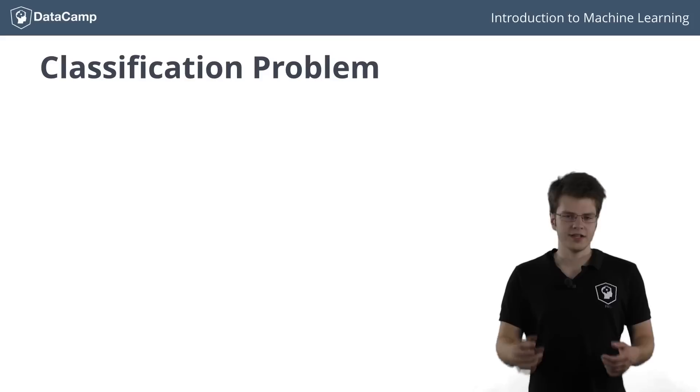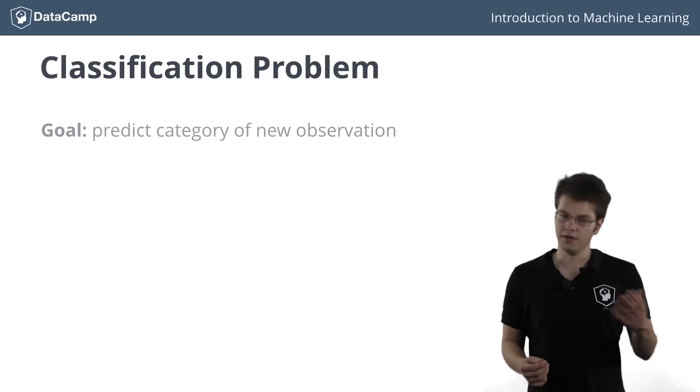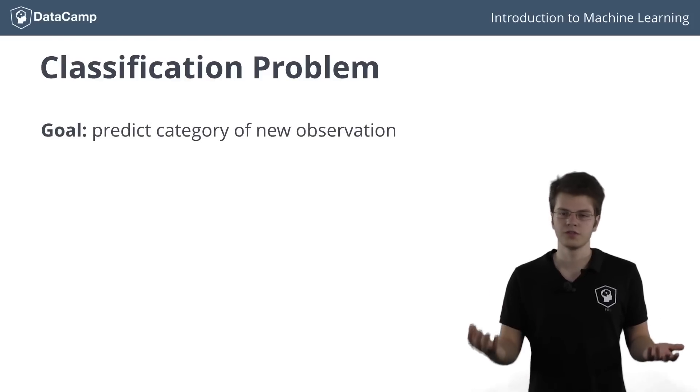First up is classification. A classification problem involves predicting whether a given observation belongs to a certain category.